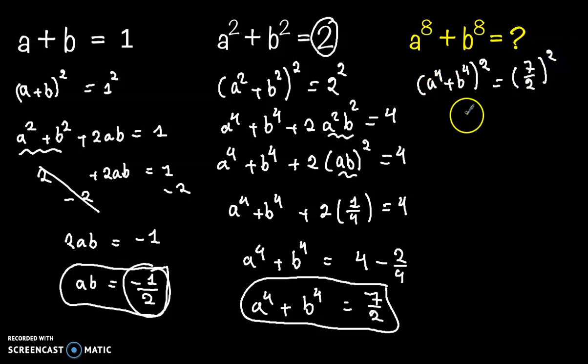Now let's expand it. So a⁸ plus b⁸ plus 2a⁴b⁴ equals 7 over 2 squared, which is 49 over 4.